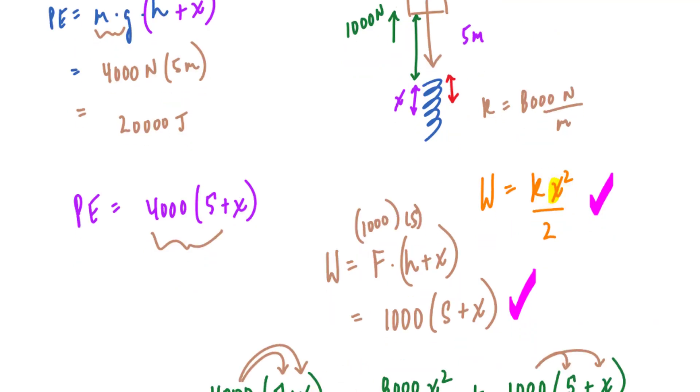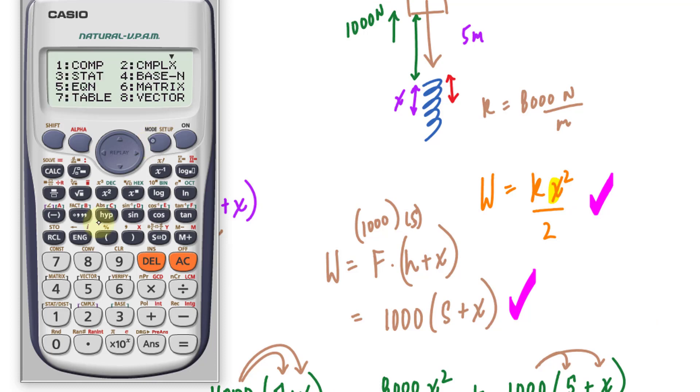Let's go ahead and do that really quickly. So going back to the calculator, I have 8,000 times 2.3 raised to the power of 2 divided by 2. 21,160 joules is the amount of work required to compress the spring.